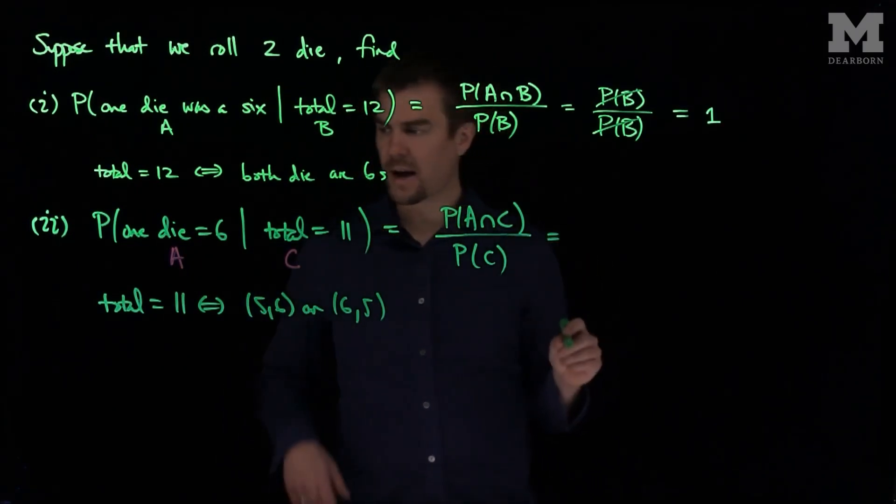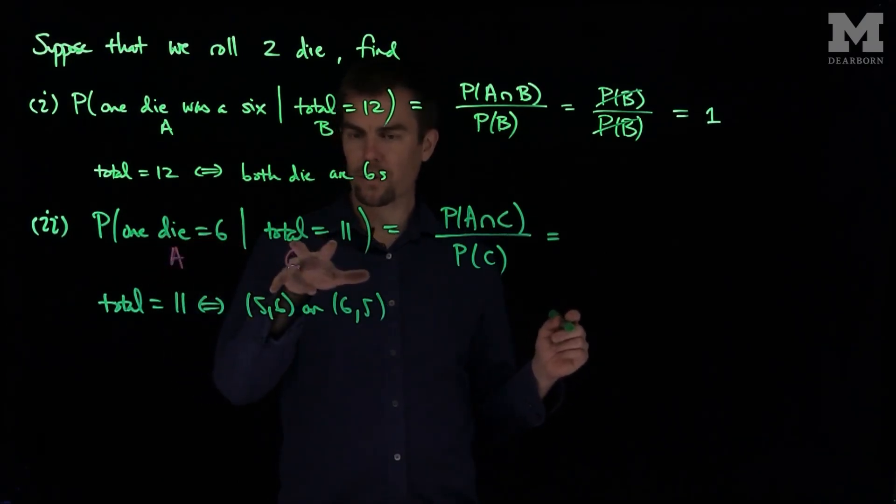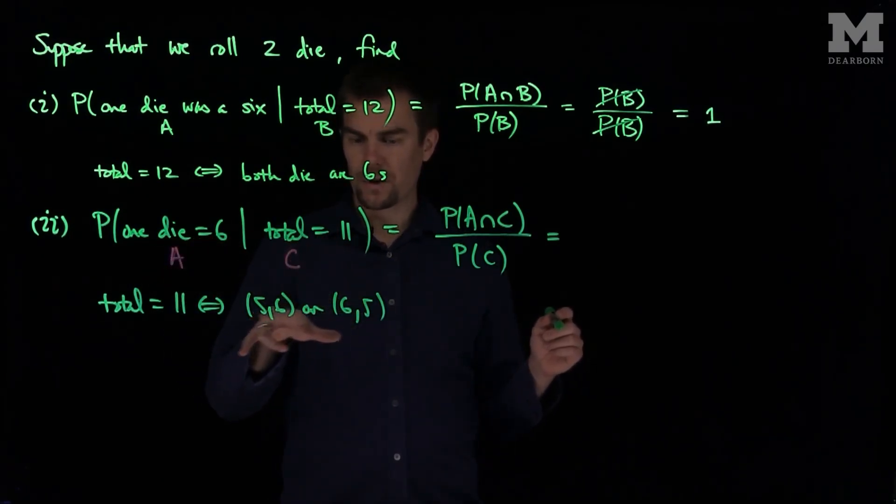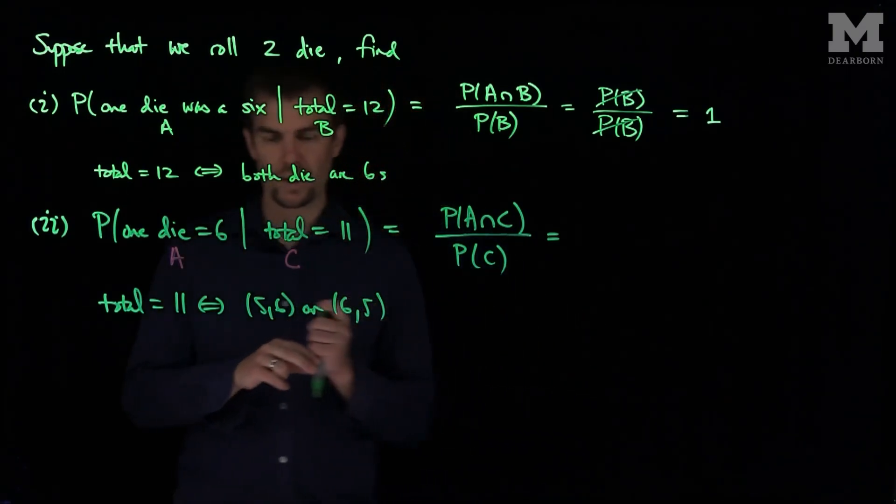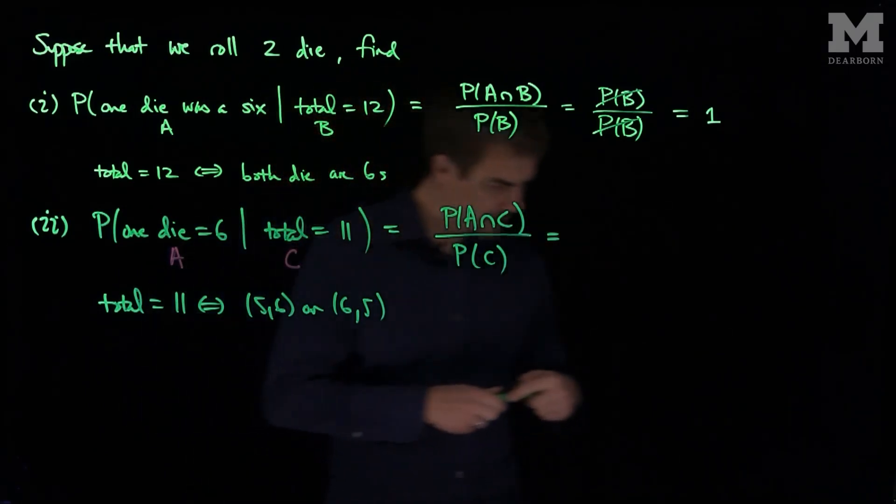So what we have over here is the top. So if I have one die being a 6 and the total being 11, well, we know that one die being 6 and a total being 11 are, in some sense, related to each other.